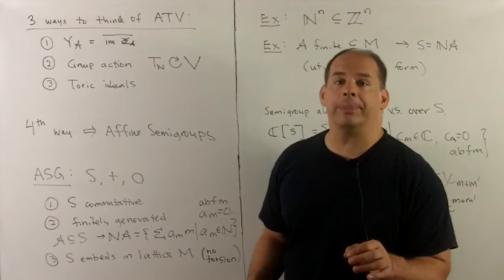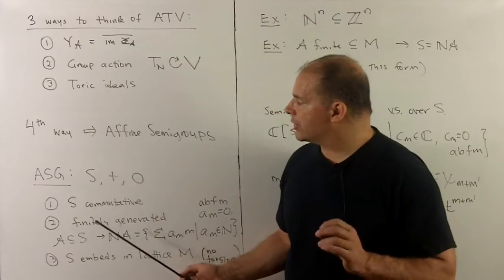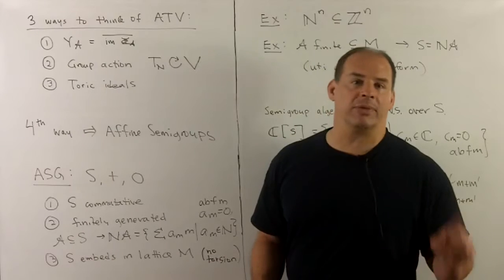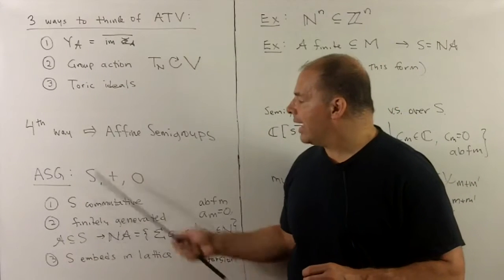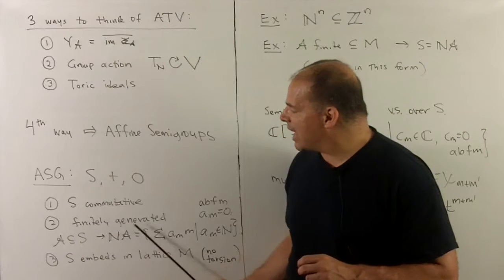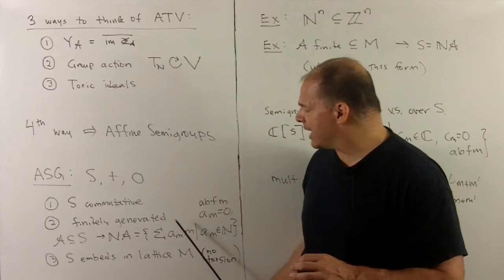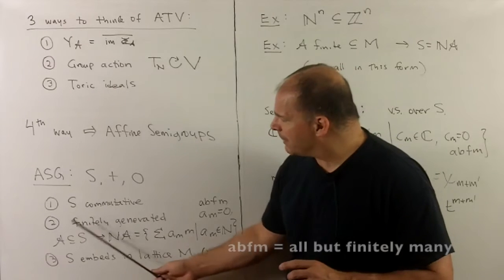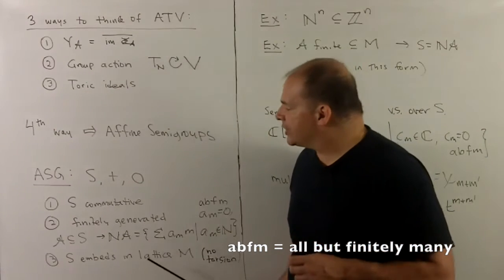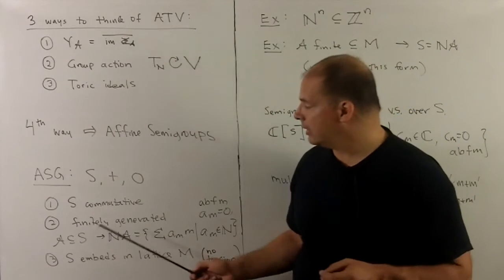Now, the machinery to consider yet a fourth way using affine semigroups. Now, affine semigroup, so this will be a set S. There will be an operation on S which is commutative, so we'll denote it by addition. And there will be a distinguished element for the identity, zero. S will be finitely generated. For notation, if I have A subset of S, then N times A, natural numbers, is just going to be the natural number span of A. So here we're going to take all possible sums A sub M times M, where M is in A and then A sub M's are all natural numbers, all but finitely many equal to zero. So this just would say that S is equal to NA for some finite A, so finitely generated.